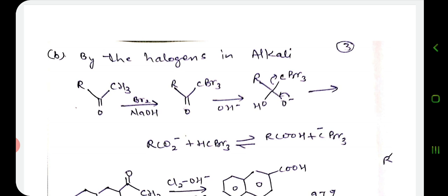We can also use halogens in alkaline medium — oxidation by halogens in alkali — and ketones give acids. Methyl ketones are oxidized by chlorine, bromine, or iodine in alkaline solutions to give acids and the corresponding haloforms. The reaction occurs by base-catalyzed halogenation, followed by elimination of the conjugate base of the haloform, and we get the corresponding acids.